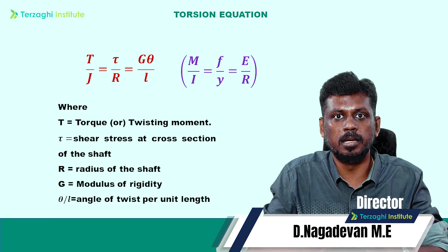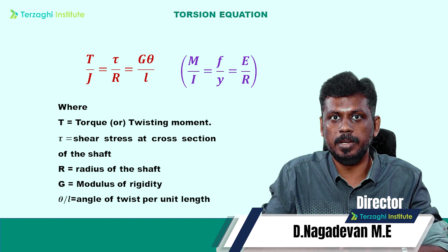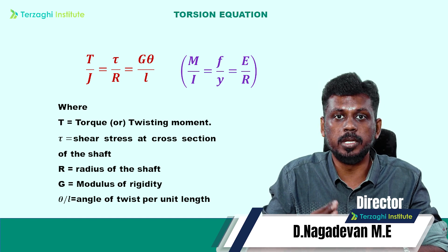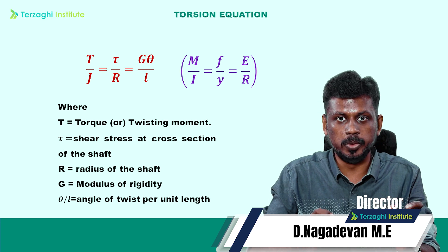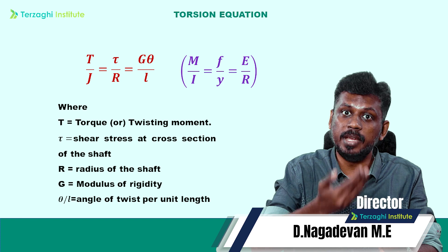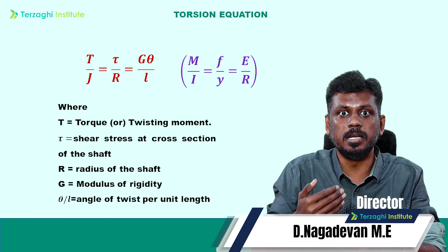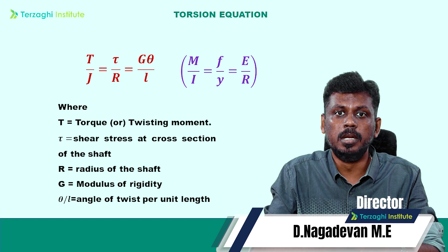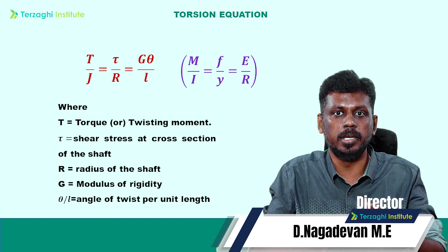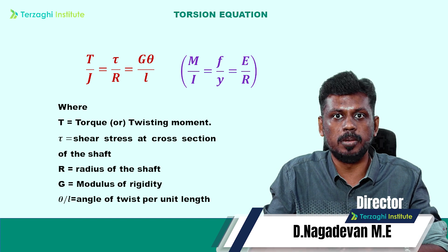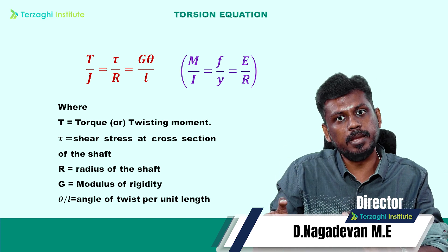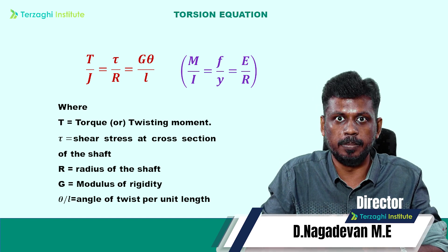Let's compare the bending theory. If we compare the bending theory, M/I = F/Y = E/R. If you look at a previous question paper, the torsion equation has an option: M/I = F/Y = E/R or T/J = Gθ/L. This is backward integration — you are covering it very well.